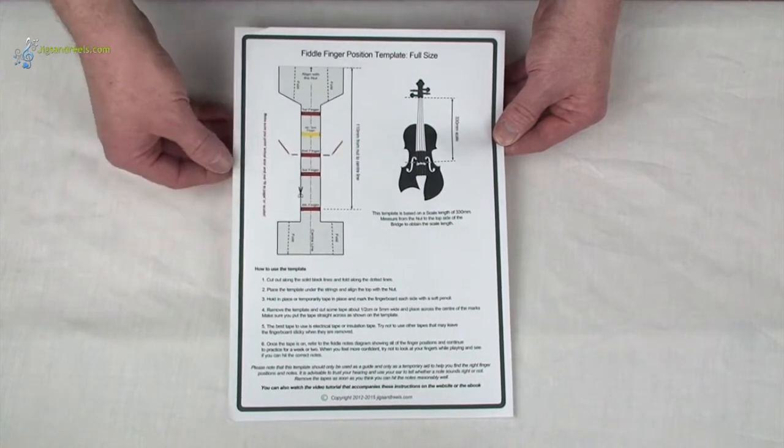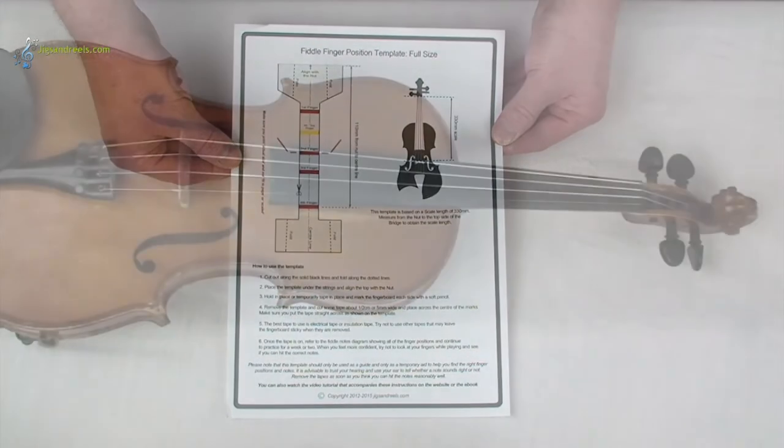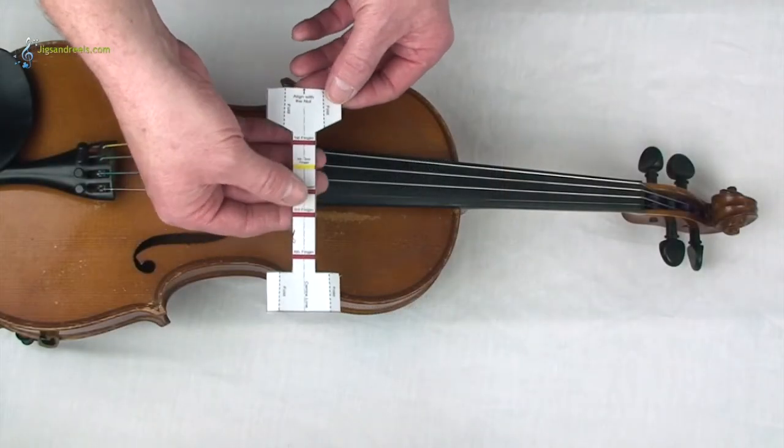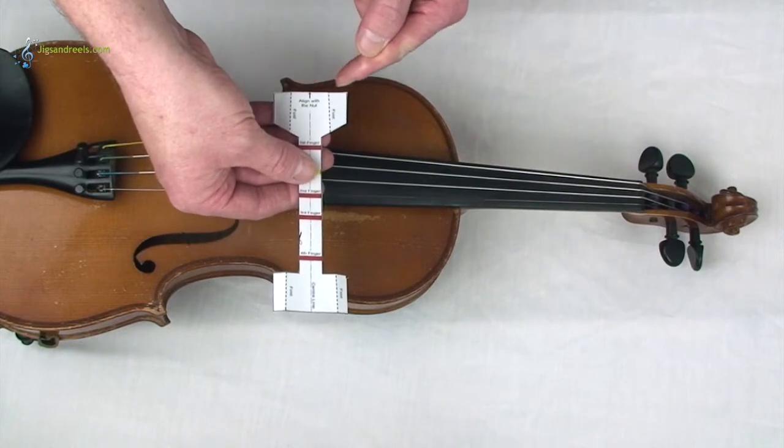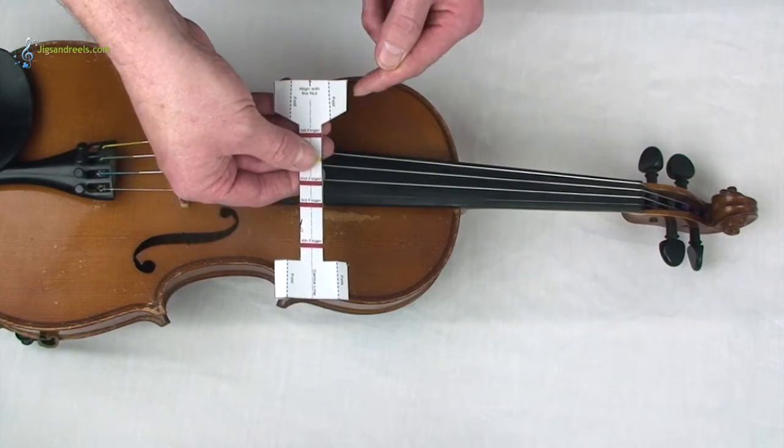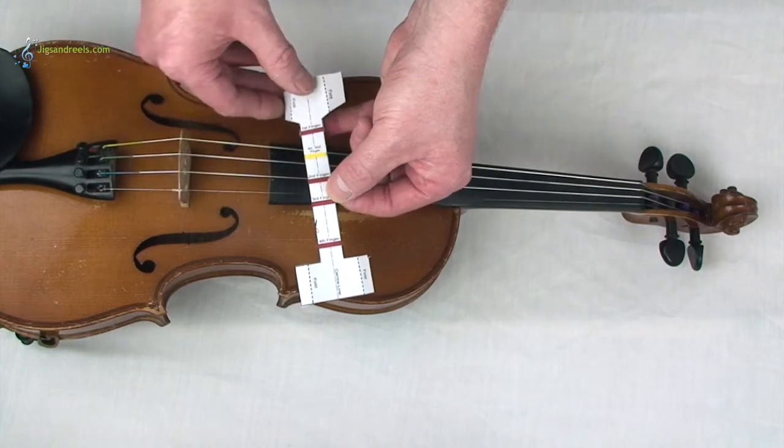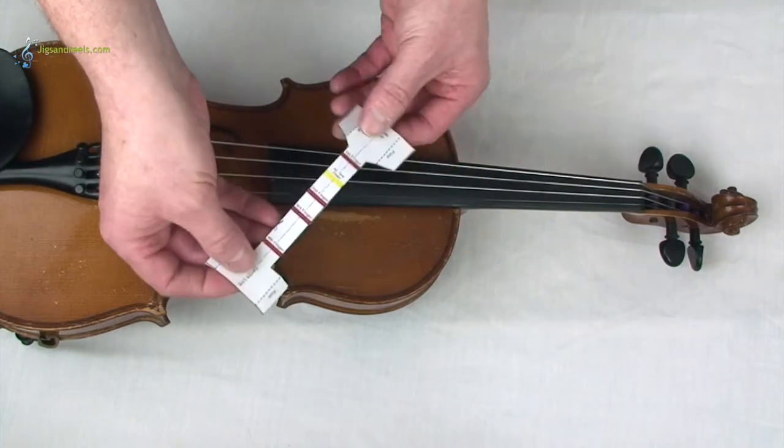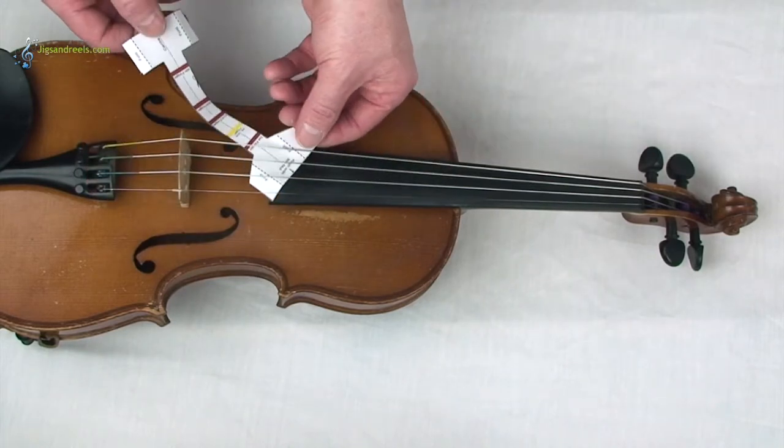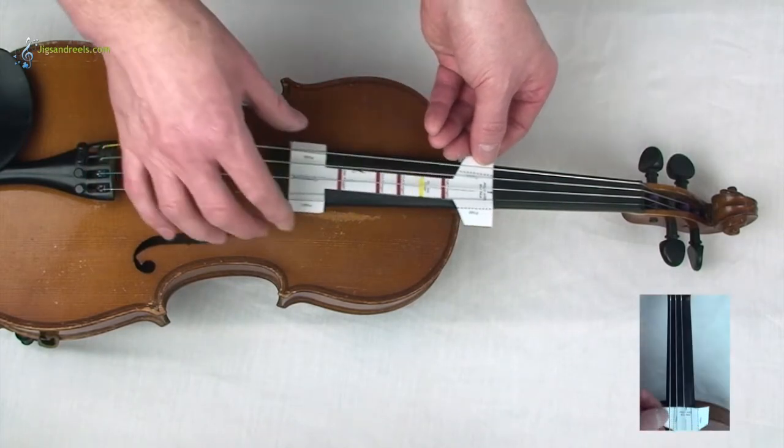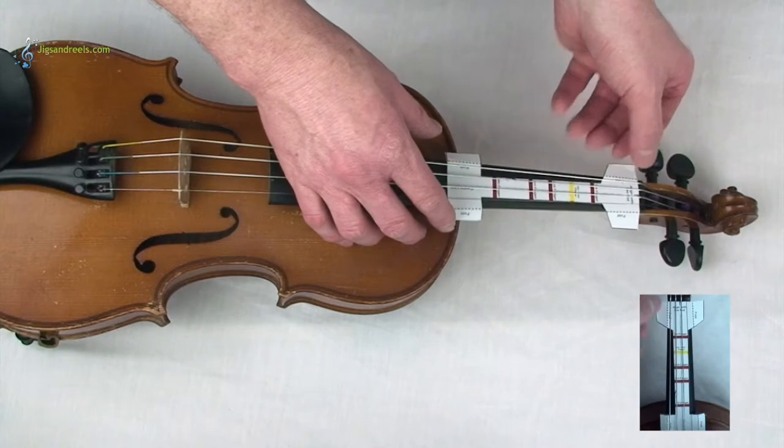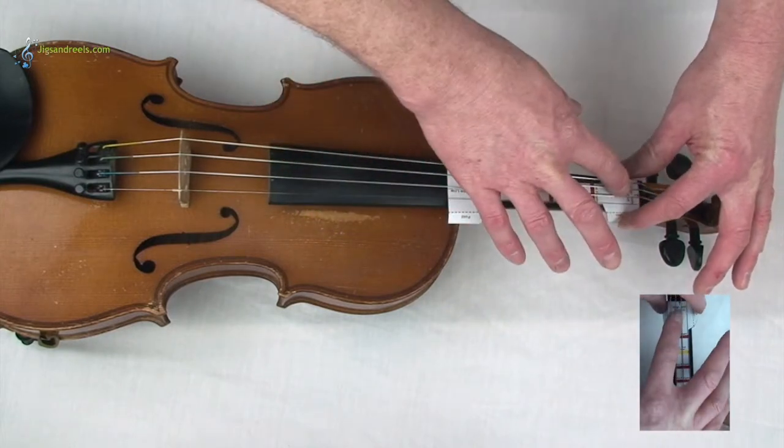I'm going to cut this one out and show you how we use it. Here's my template already cut out. Make sure that this line here is very accurate and you cut carefully around the rest of the template. I've folded along these dotted lines. If I slide underneath the strings, I can slide it towards the nut, which is just this little ridge at the top.